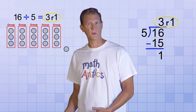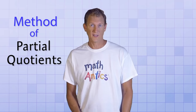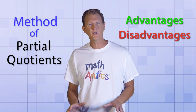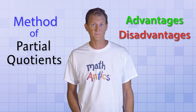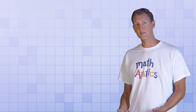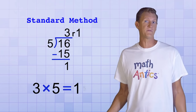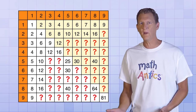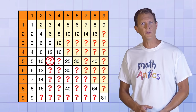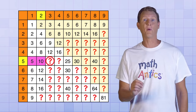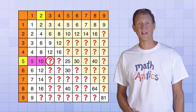There's another method for doing division that you may or may not have heard about before. It's called the method of partial quotients. Like most methods, it has advantages and disadvantages. One of its main advantages is that you don't need to know a lot of different multiplication facts to use it. For example, when we used the standard method to divide 16 by 5, it really helped to know that 3 times 5 equals 15. But what if we hadn't memorized that? What if we only knew that 1 times 5 equals 5 and that 2 times 5 equals 10? With the partial quotients method, that would be enough to get us the right answer.